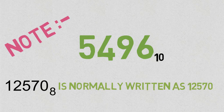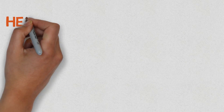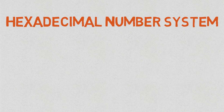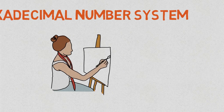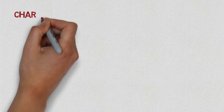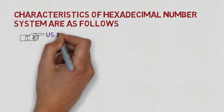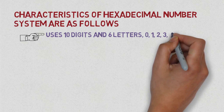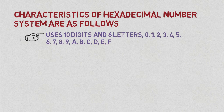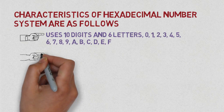Here we are going to see the last number system in this session: the hexadecimal number system. The characteristics of the hexadecimal number system are: it uses 10 digits and 6 letters — 0, 1, 2, 3, 4, 5, 6, 7, 8, 9 and A, B, C, D, E, F.